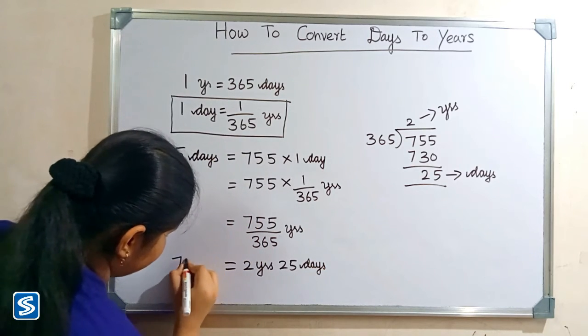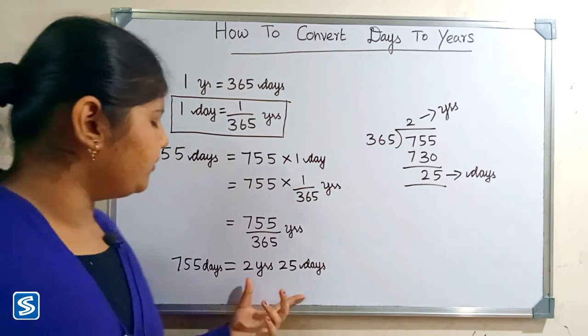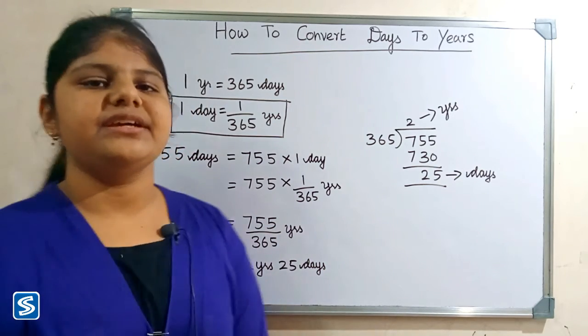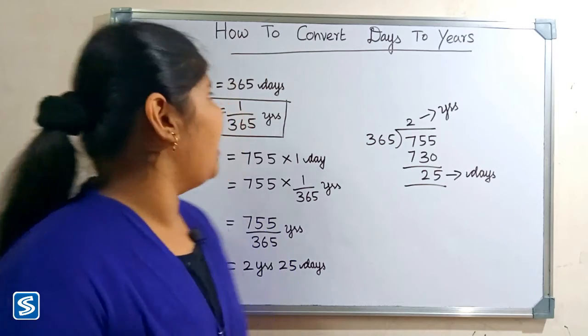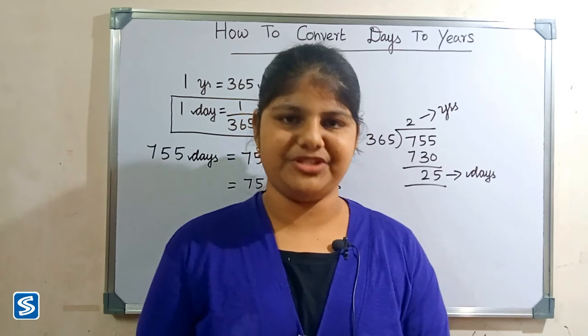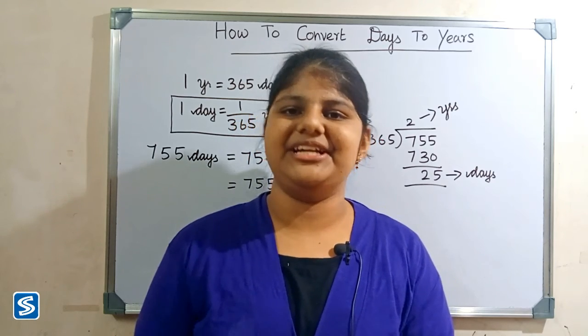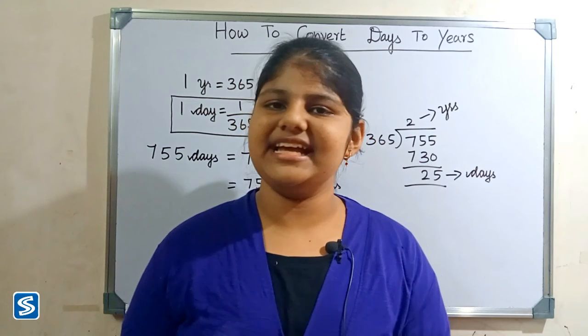So 755 days is equal to 2 years 25 days. Hope you friends all understood how to convert days to years. Okay friends, if you did not subscribe to my channel, can you subscribe and press the bell button so you can receive all my updated videos regularly. Bye friends, thank you.